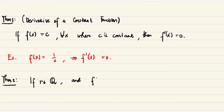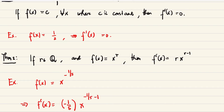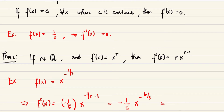Next theorem: if r is a rational number and f(x) = x^r, then f′(x) = r·x^(r−1). You subtract one from the exponent of x and transfer the original exponent as a coefficient. For example, f(x) = x^(−1/5); since −1/5 is a rational number, f′(x) = (−1/5)·x^(−1/5 − 1), which simplifies to (−1/5)·x^(−6/5).